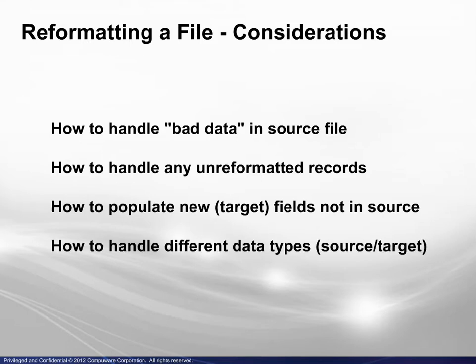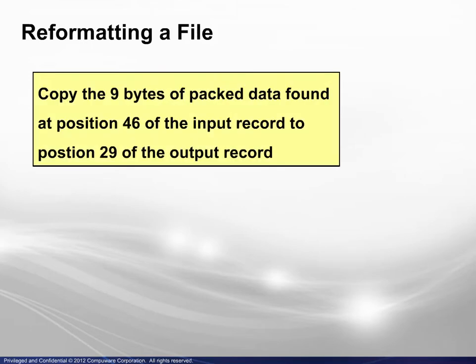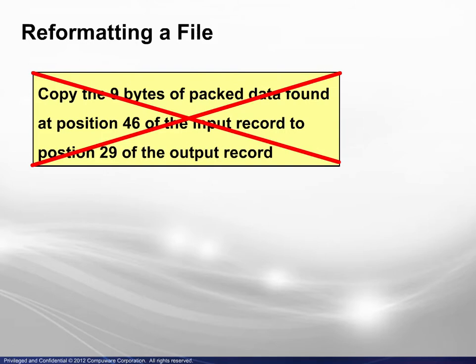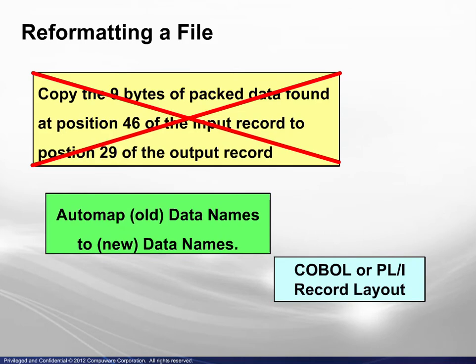And finally, how to handle different data types — if, for example, the source field is simply numeric but the target field is packed. With the FileAid Reformat Utility, gone are the days of tediously mapping source to target one field at a time by data type and record position. Instead, fields are mapped automatically based on COBOL or PL1 record layouts.